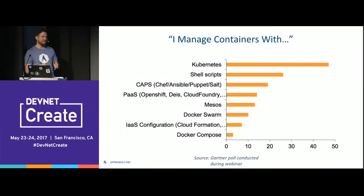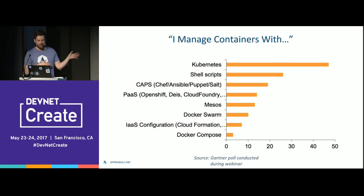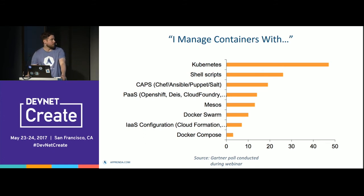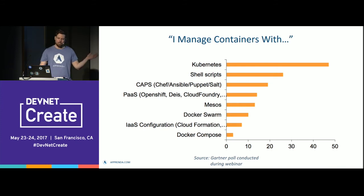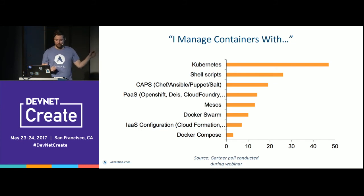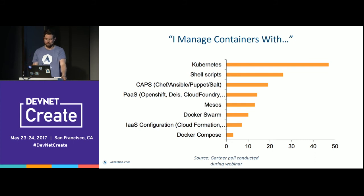So what are we talking about today? We're talking about Kubernetes. This is actually from a poll that a company — I used to be an analyst at Gartner covering public cloud — one of my ex-co-workers did while doing a webinar. He asked simply what the audience is managing containers with. The top answer was Kubernetes, which is great. The number two answer is actually shell scripts, which I thought would be number one. Probably the biggest achievement is that Kubernetes beats shell scripts at this point — the glue of all enterprise development.